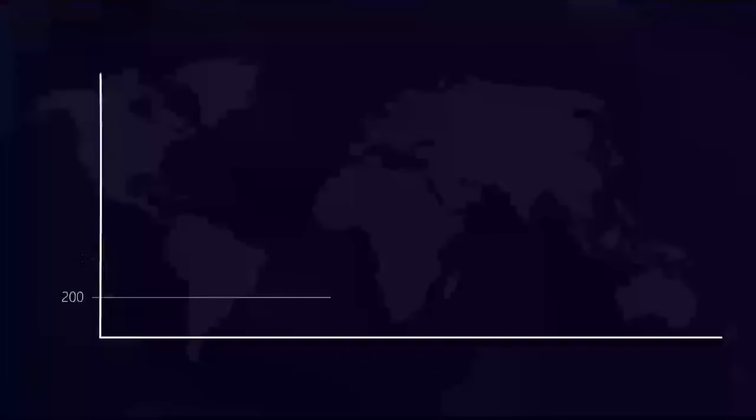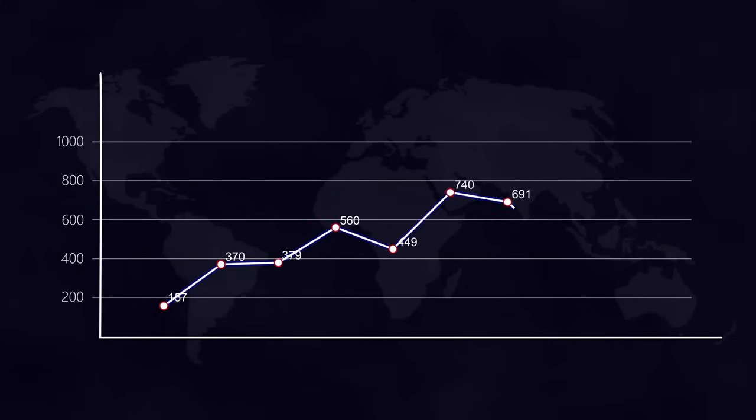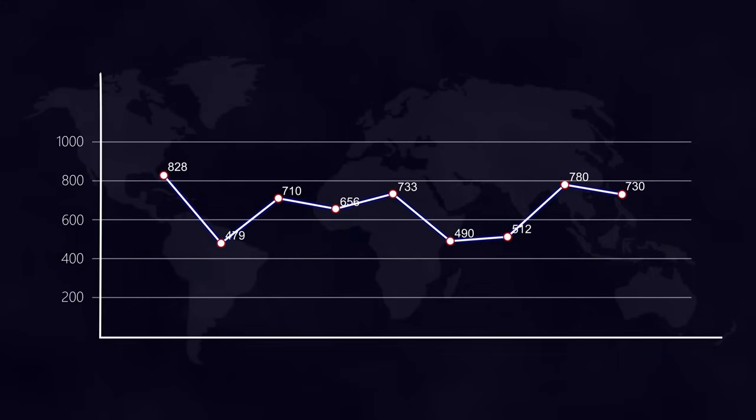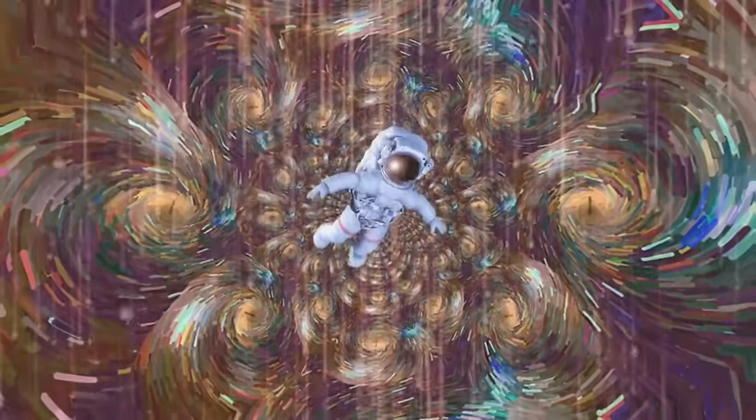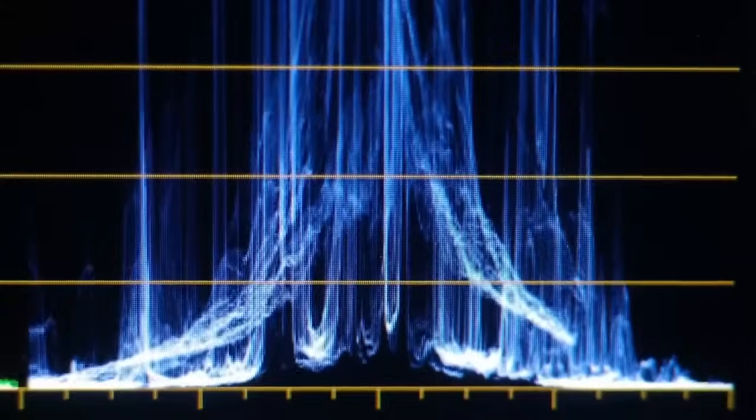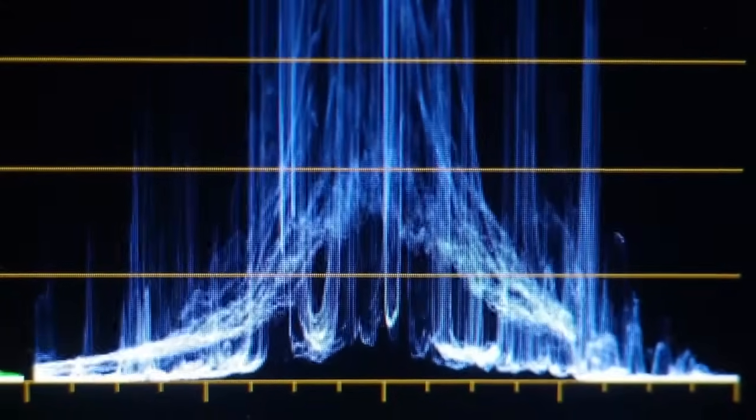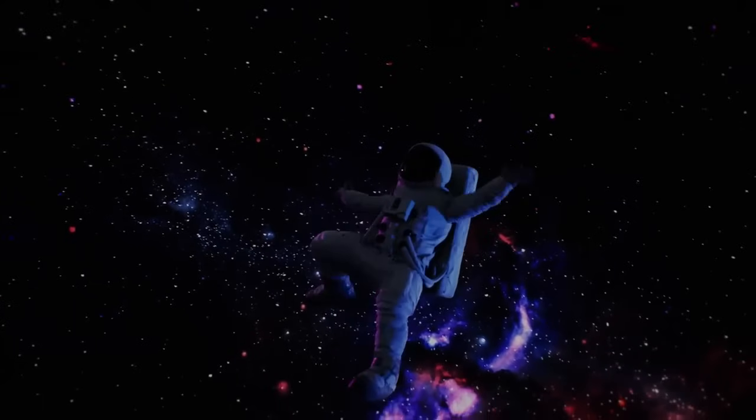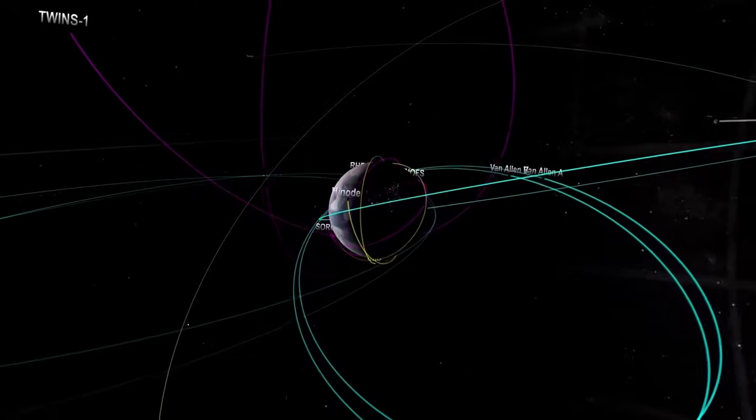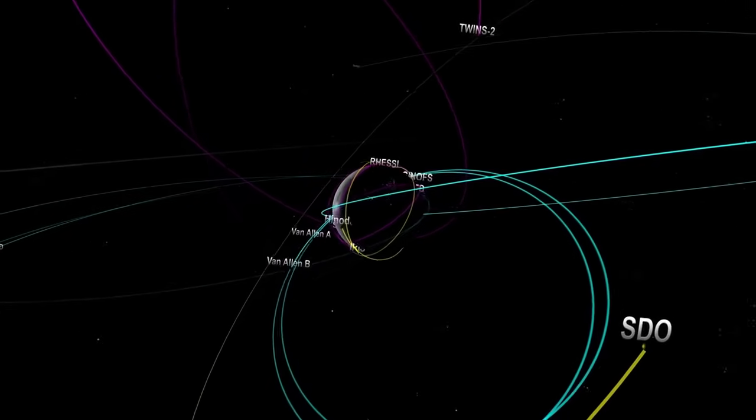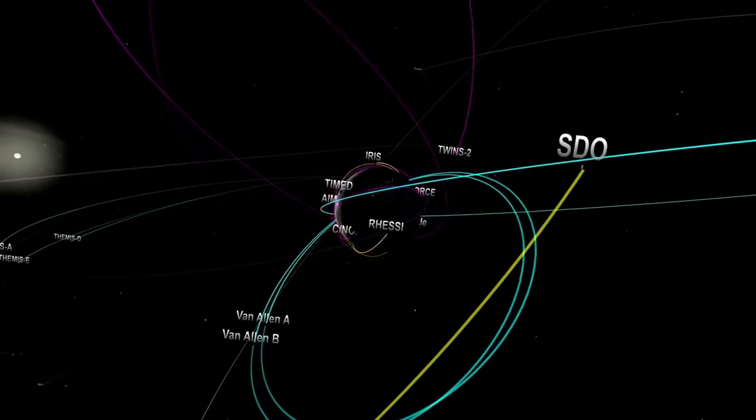Although originally built to operate for just five years, Voyager 2 has far exceeded expectations, still transmitting information more than four decades later. Its longevity reflects the ingenuity and careful planning of the engineers behind it. In recent years, the team managing the spacecraft has had to make tough choices, turning off non-essential systems to conserve energy.